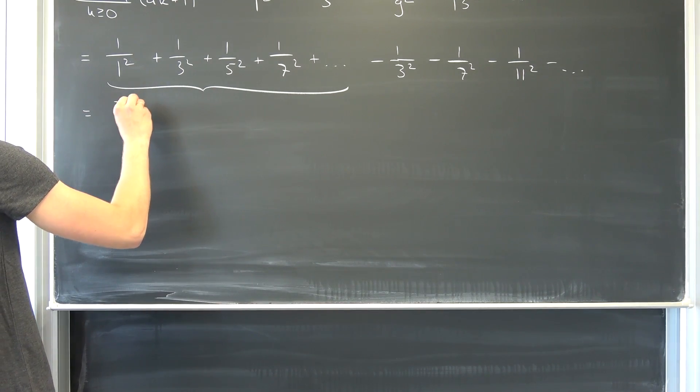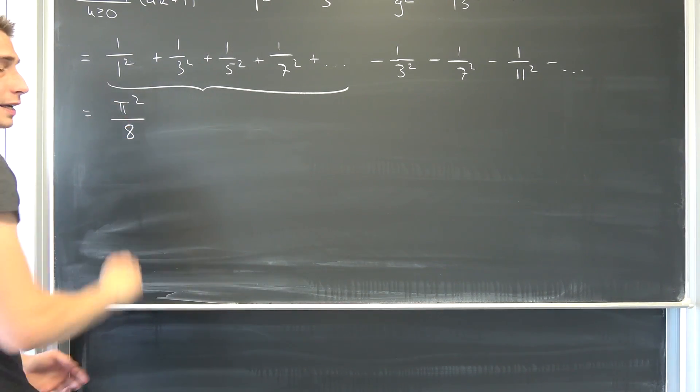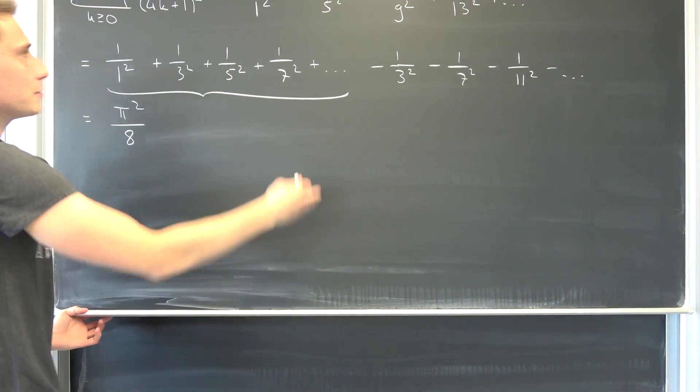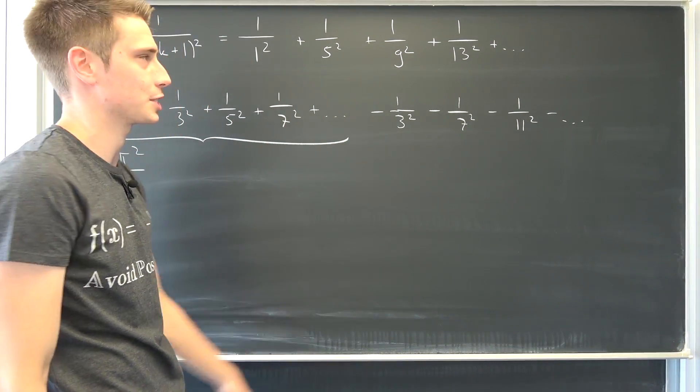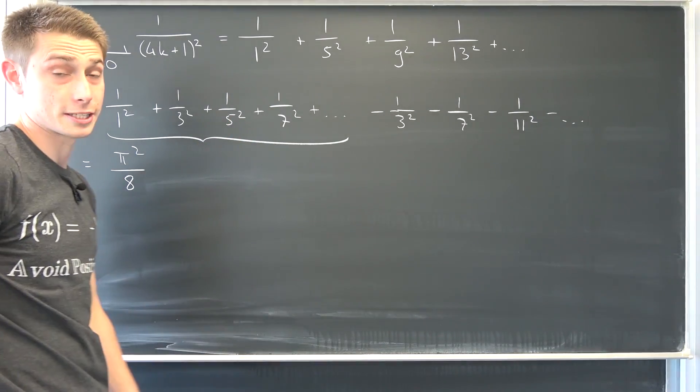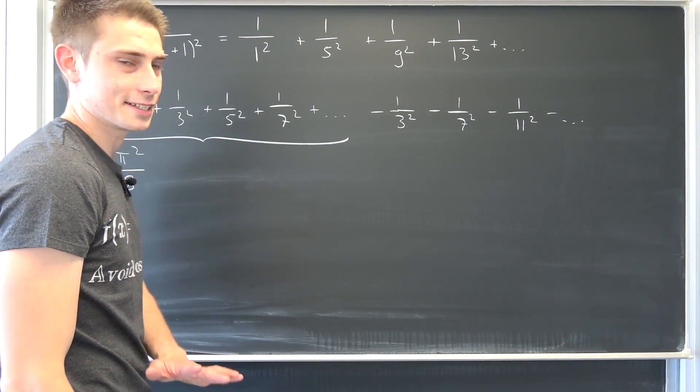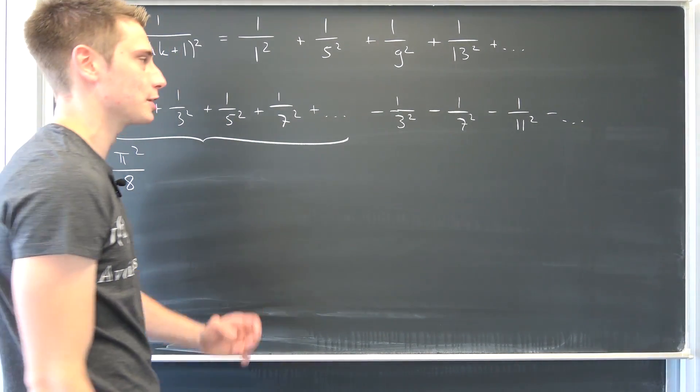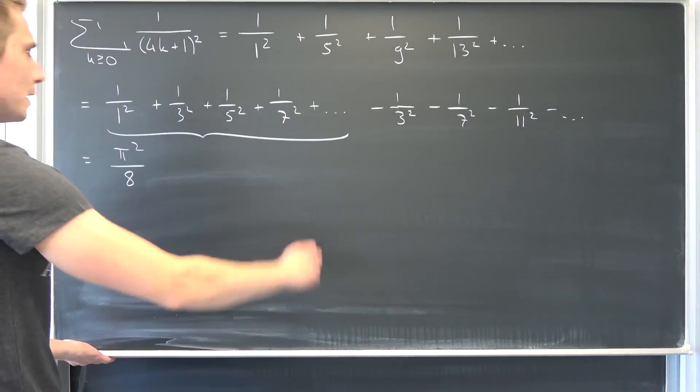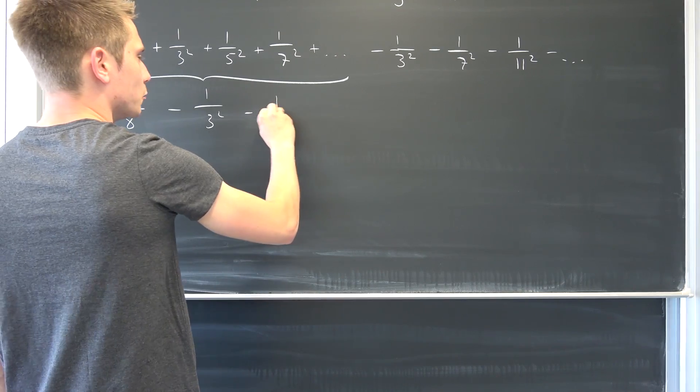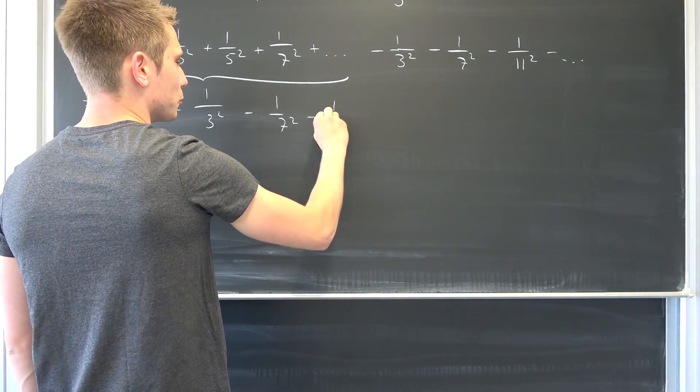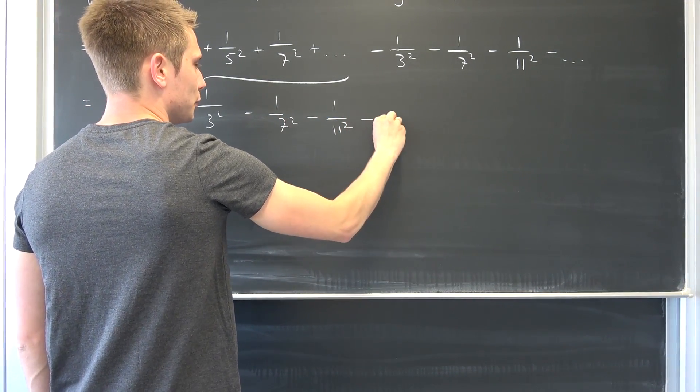This is probably what we also gathered in the other video, in the main video where I was using the trigamma function right here. It was just so fancy, watch it seriously. This thing right here is the coolest series I have ever evaluated, it's such a nice boy. We are going to have negative 1 over 3 squared, negative 1 over 7 squared, negative 1 over 11 squared up until infinity.